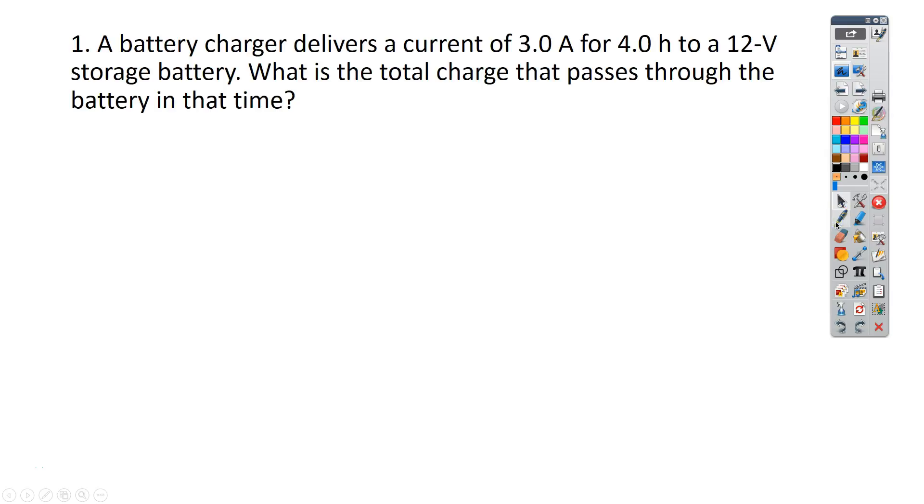Hey, this is Horner, and we're going to look at the problems for section 18.1 and 18.2 in your book. The first problem says a battery charger delivers about 3 amps for 4 hours to a 12-volt storage battery. They want to know what is the total charge that passes through the battery in that time.